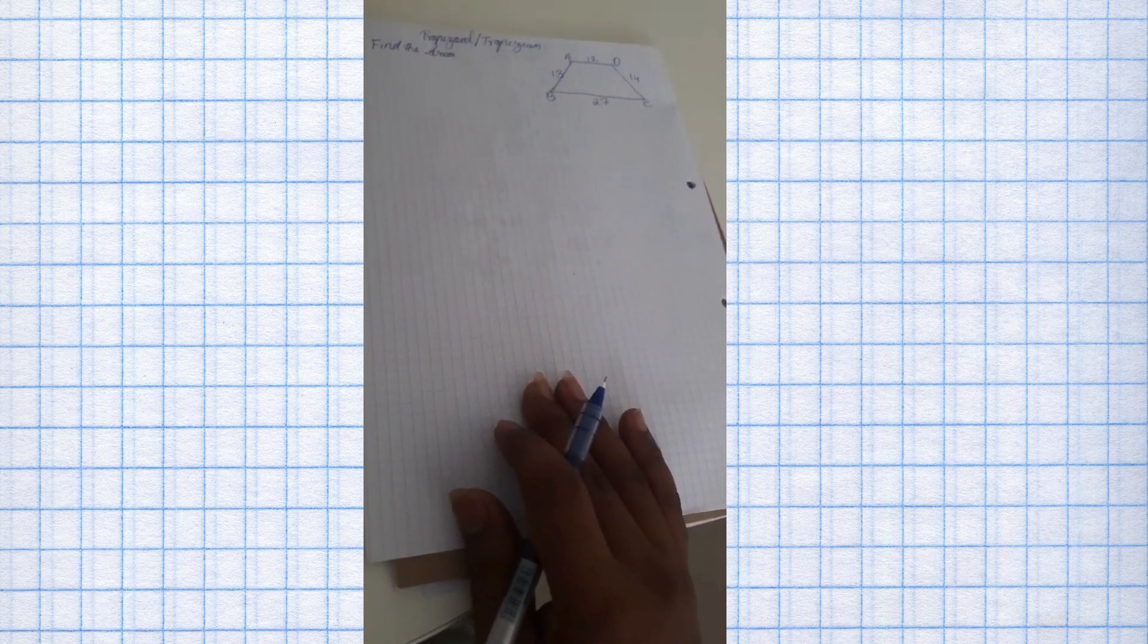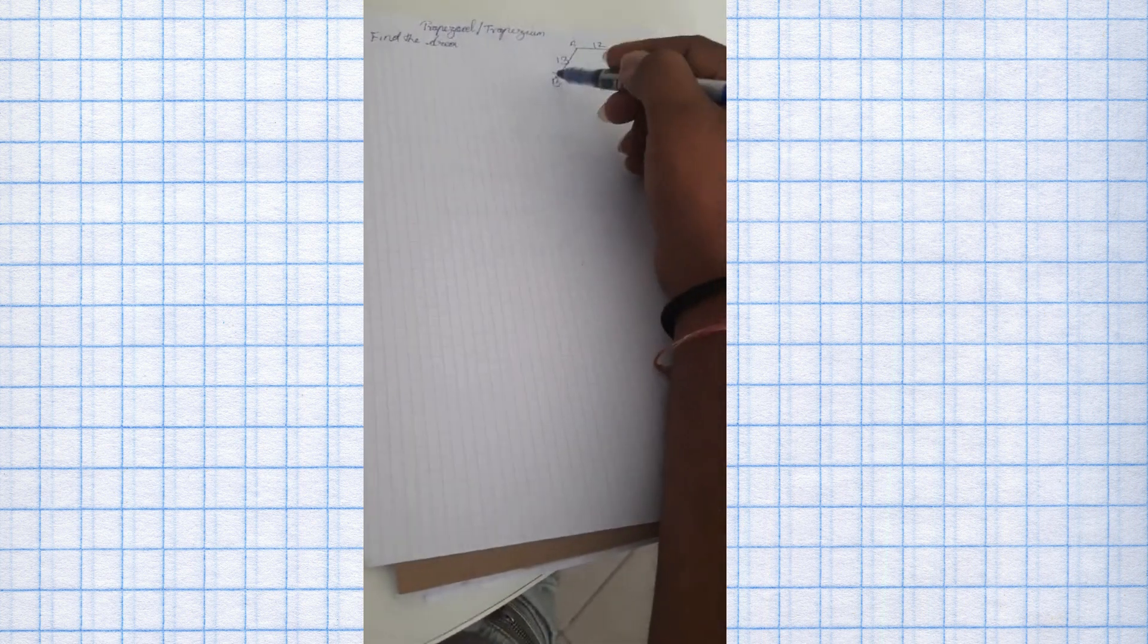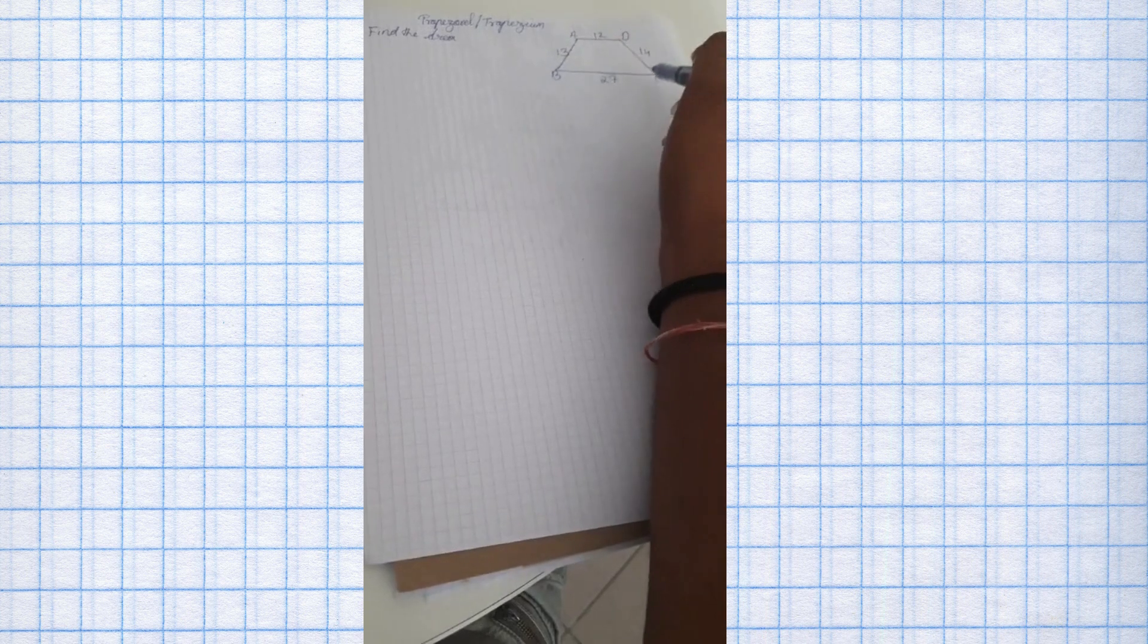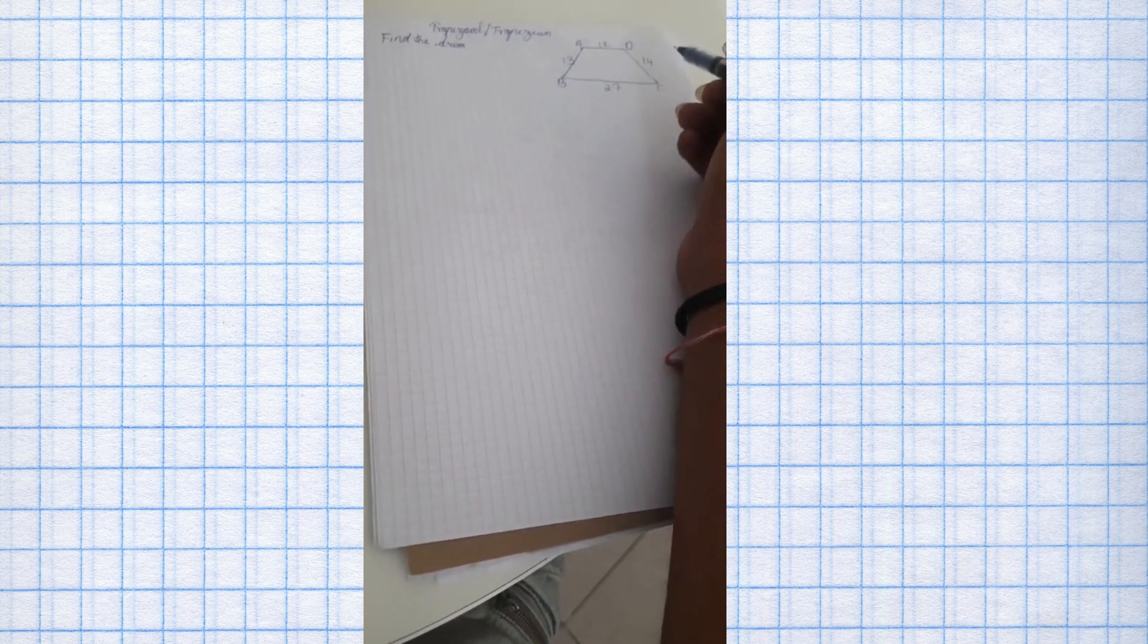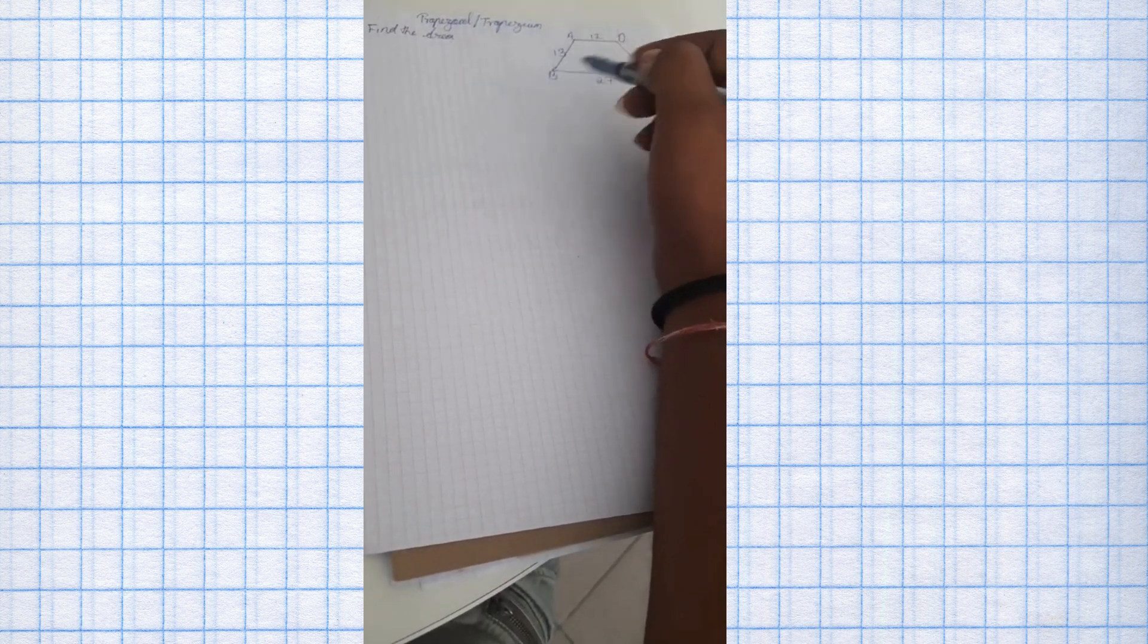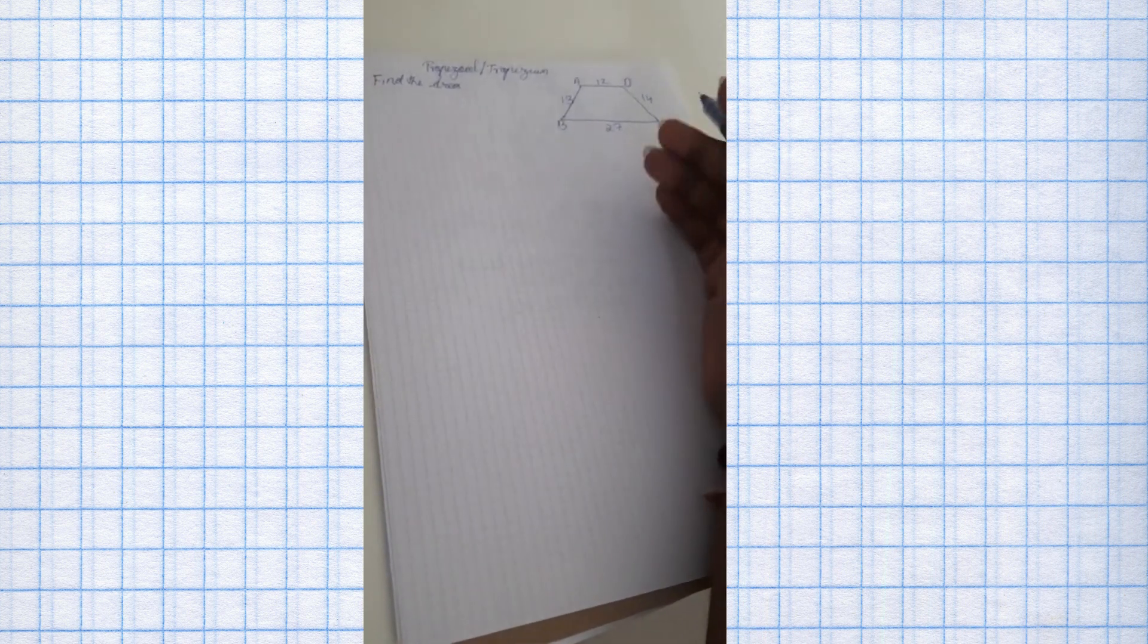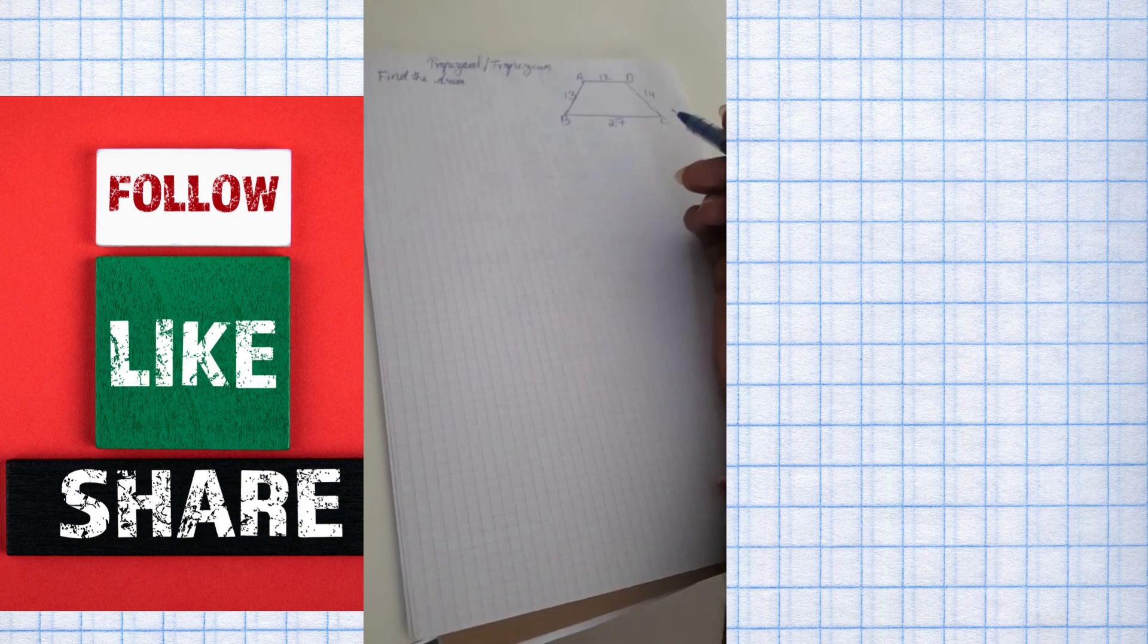Hello and welcome to our online classes. Today we're going to find the area of this particular figure. This is called a trapezium in India and a trapezoid in the Western world. As you can see, these two lines AD and BC are parallel whereas AB and DC are not exactly equal. This question generally comes in eighth grade. So what do we have and how do we do it?